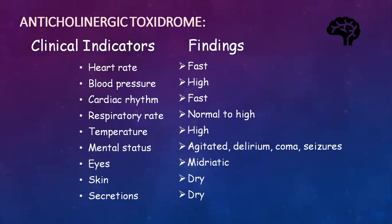In the anti-cholinergic toxidrome, the findings are: heart rate will be very fast, there will be high blood pressure, fast cardiac rhythm, normal to high respiratory rate, and temperature will be very high. The mental condition of the patient will be agitation and delirium; the patient may go into a coma, and seizures can also be present. Eye changes: pupils will be dilated. Skin and secretions are very dry.